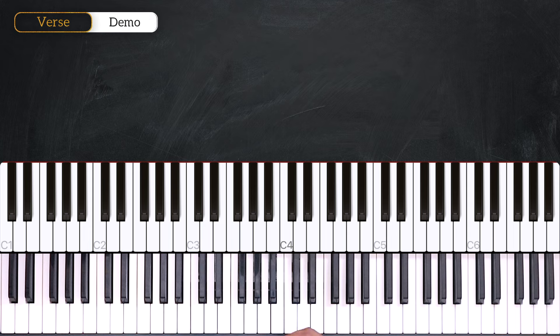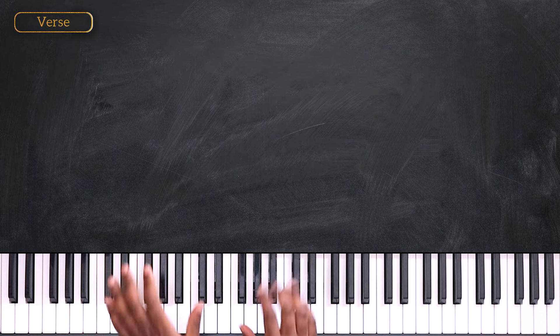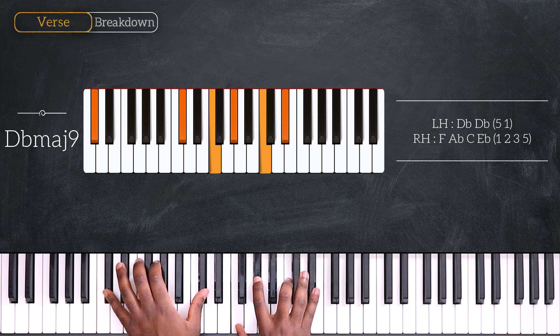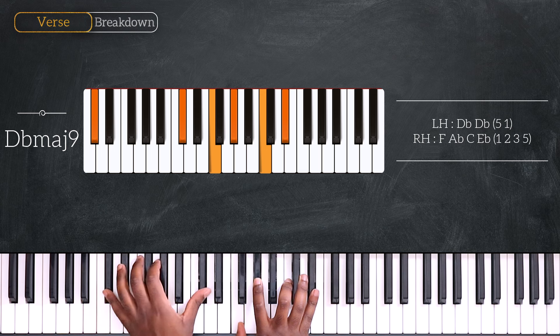But you're going to see later on in the section that we're going to slightly change the progression, especially in the voicings. So we have first a Db major 9 chord, octave Db on the left, F, Ab, C, and Eb.